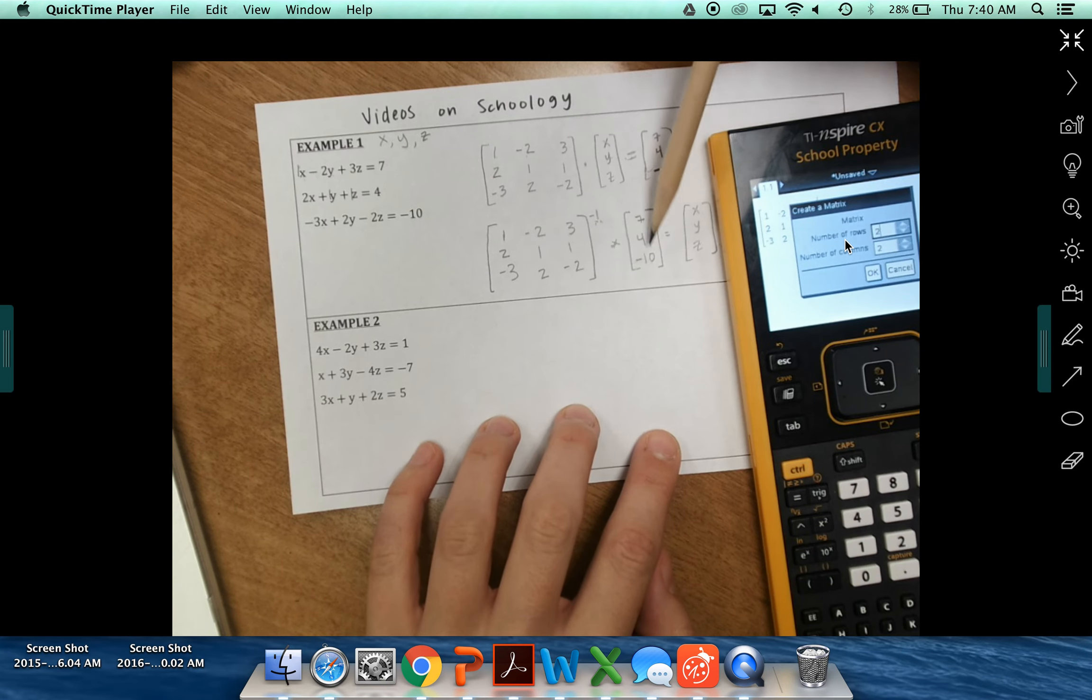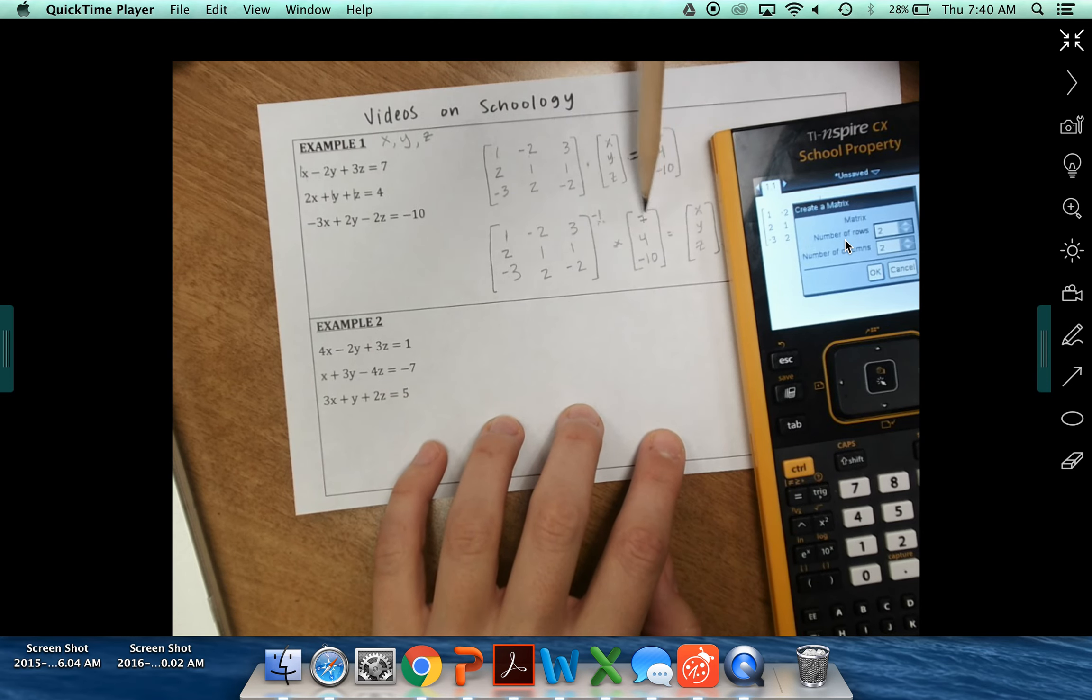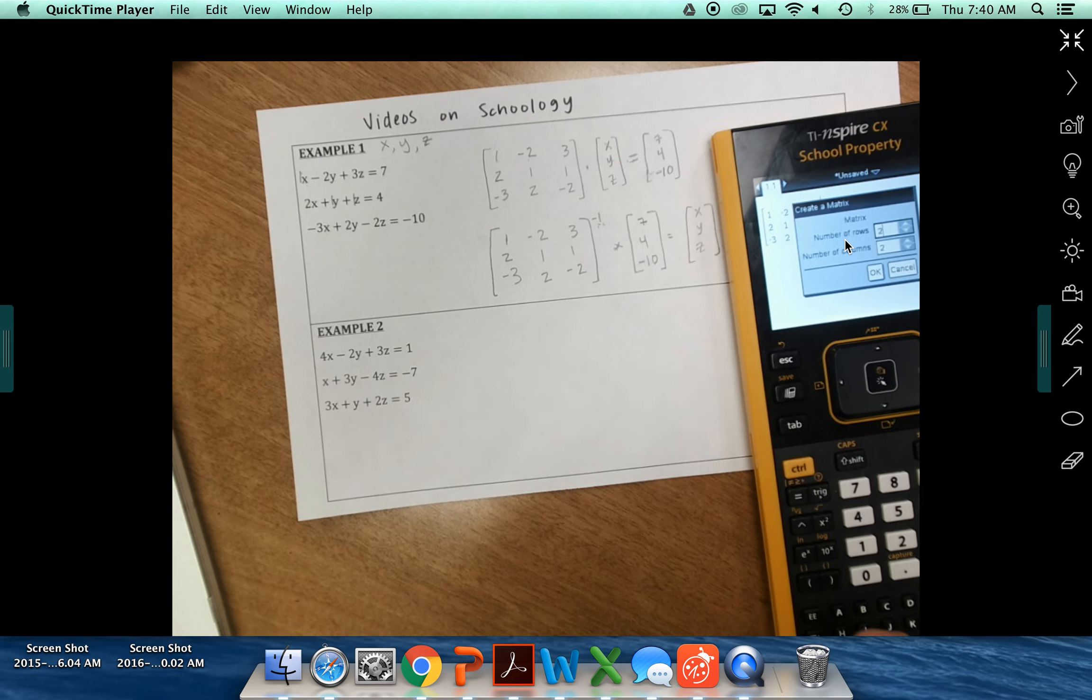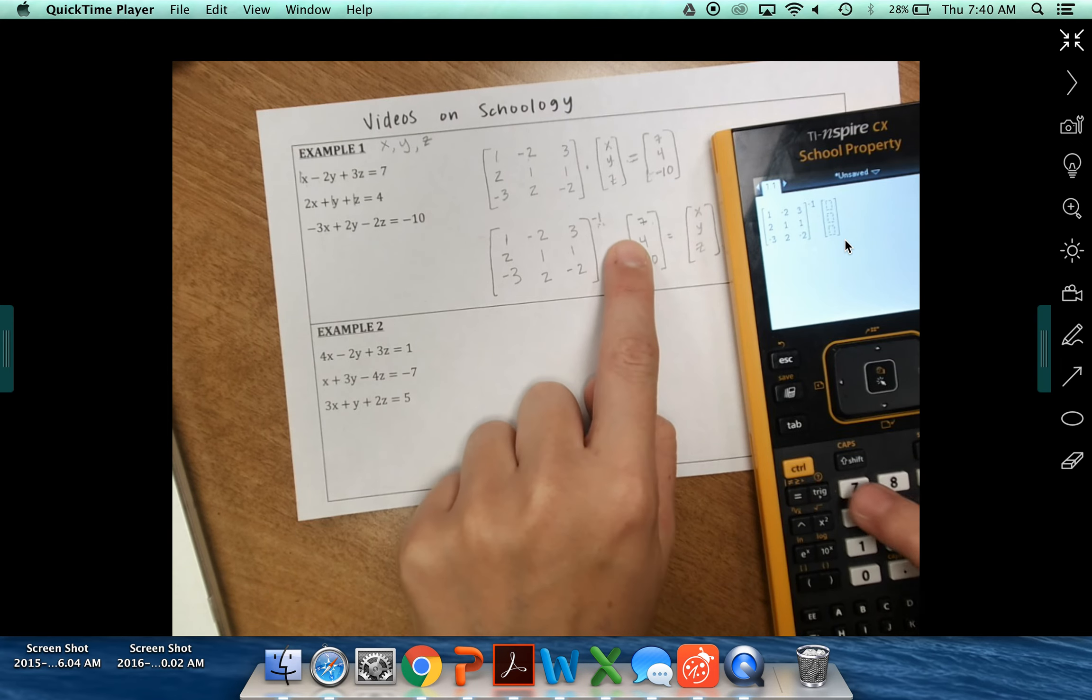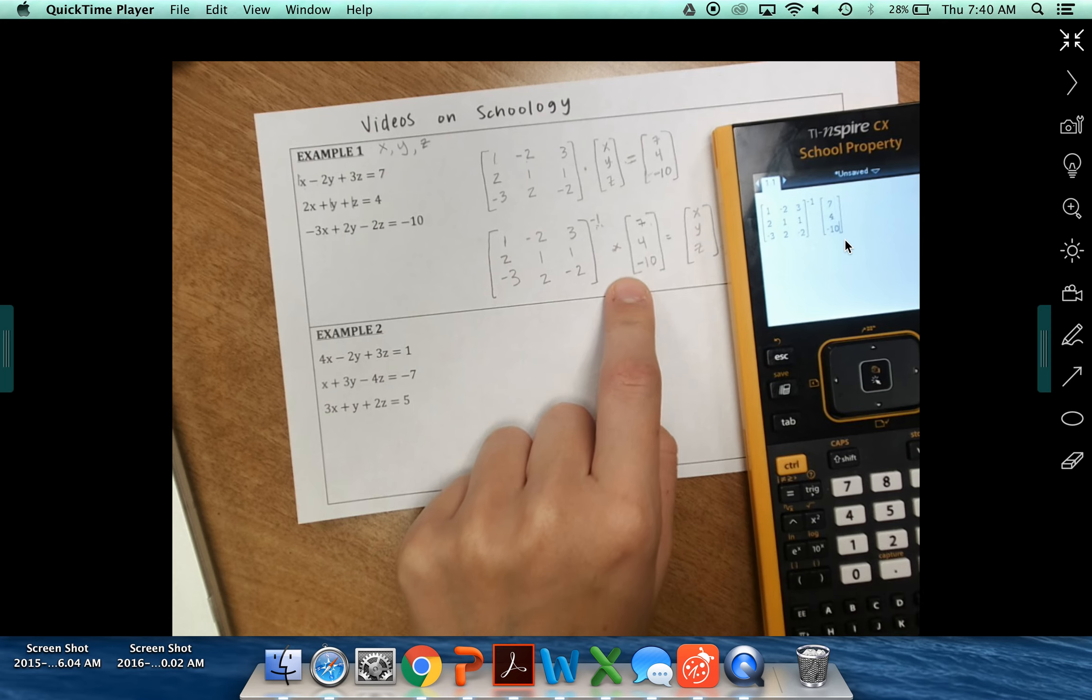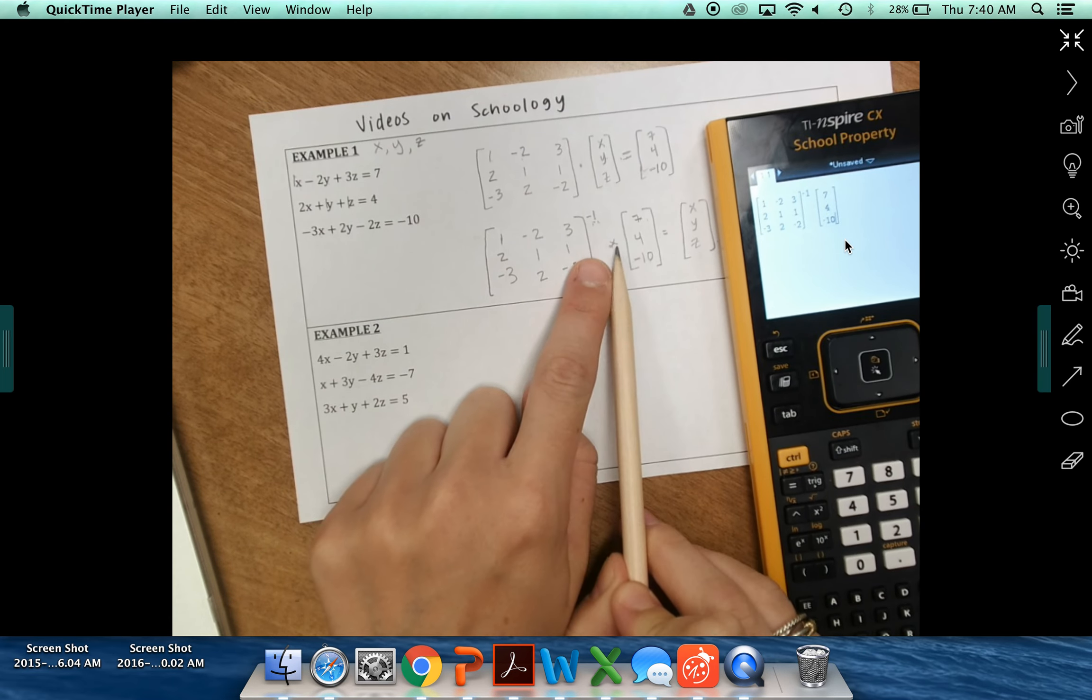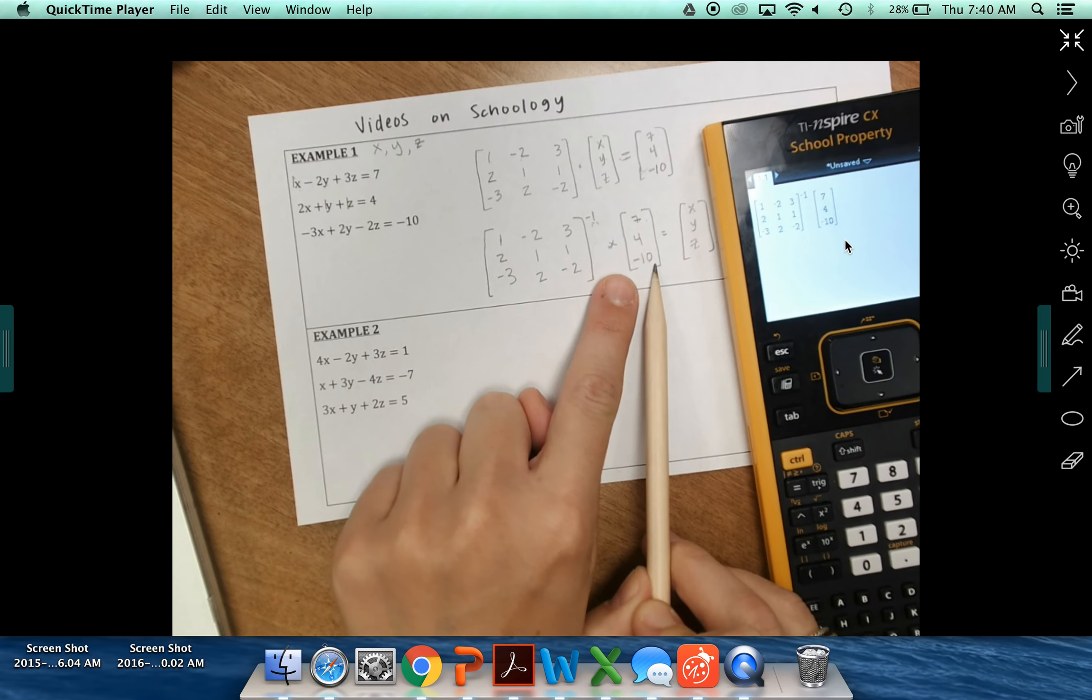This time we only have one row. Or excuse me. We've got 3 rows and 1 column. So 3 rows, 1 column. If you make a wrong matrix, you can always just delete it and make another one. So we've got in this case 3 rows. And then we've got 1 up and down column. Now I can enter in my 7, 4, negative 10. So I've got the inverse of this matrix that's got all my coefficients. Times what those equations were equal to.